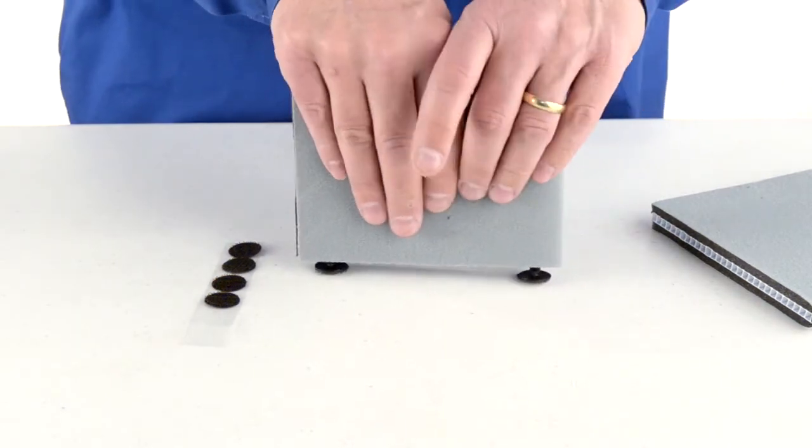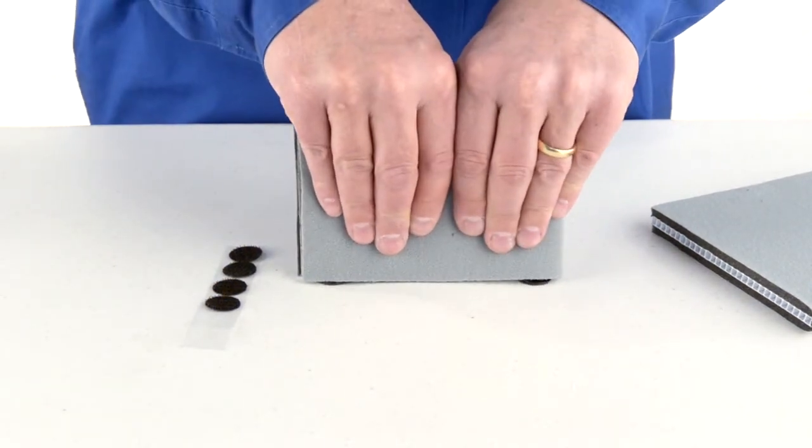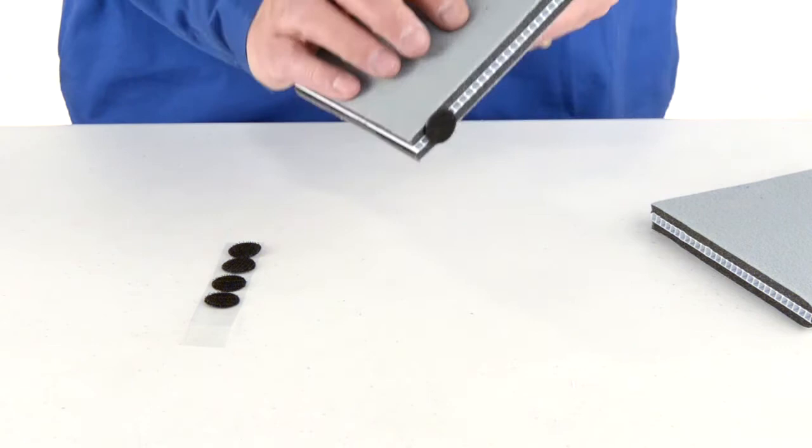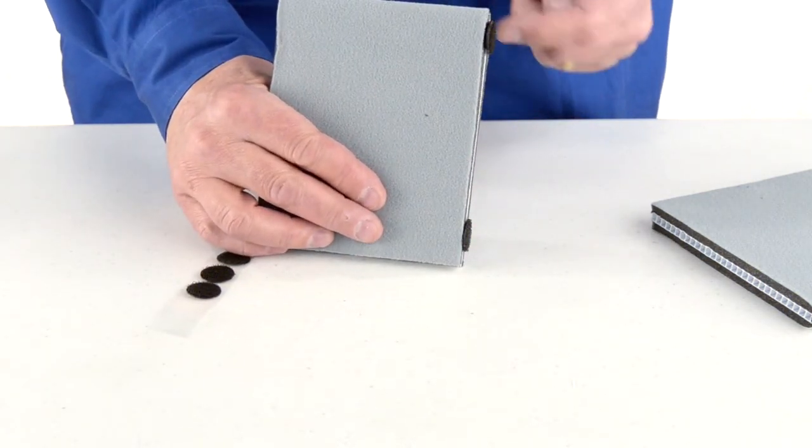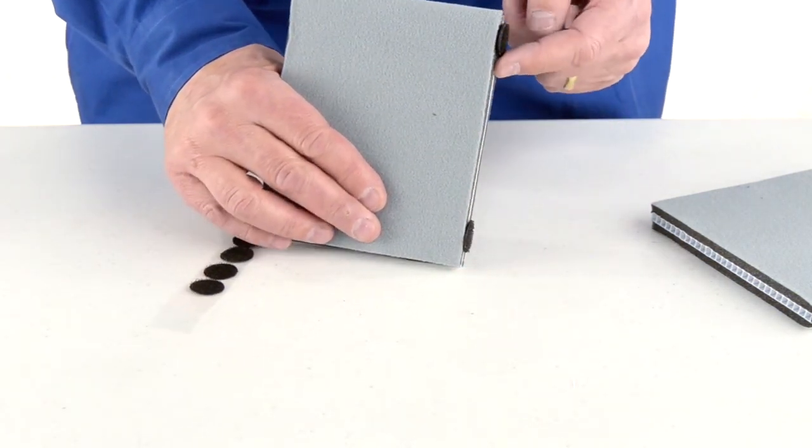What I like to do is put them down on the table and push them in all the way. So now we have two dots that are pushed in all the way into the edge of the divider.